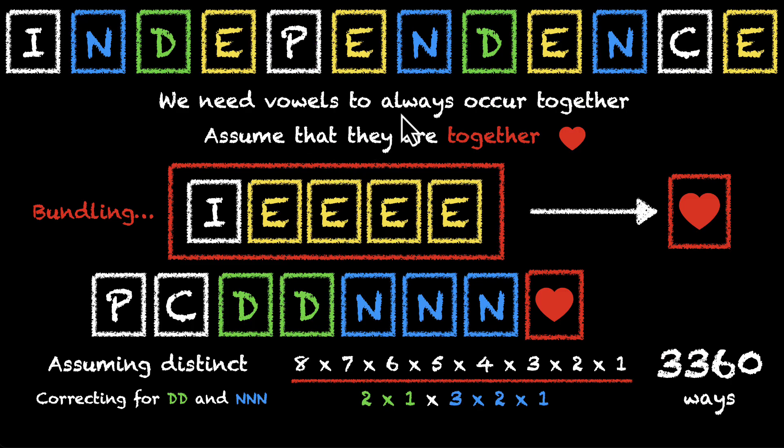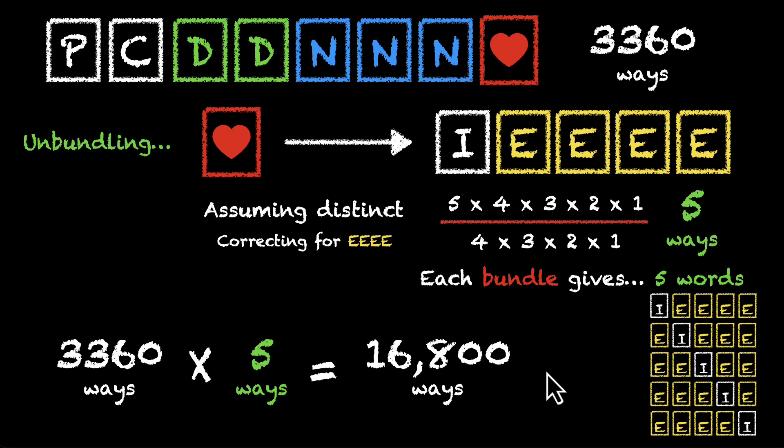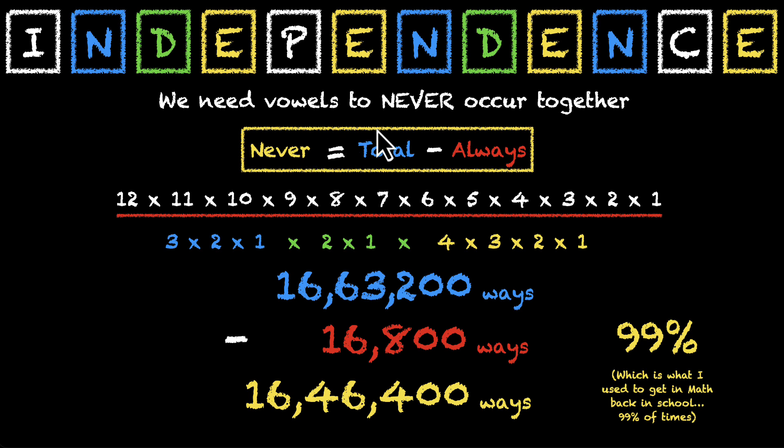To find the number of words where vowels are always together, we bundled all the vowels, we figured out the number of ways and then we unbundled and made room for correction. And finally, to find the number of words where the vowels are never together, we subtracted from the total number of words the number of words where they're always together.